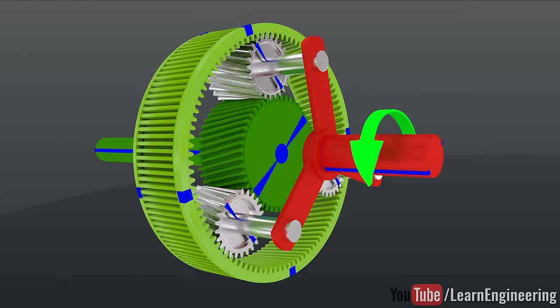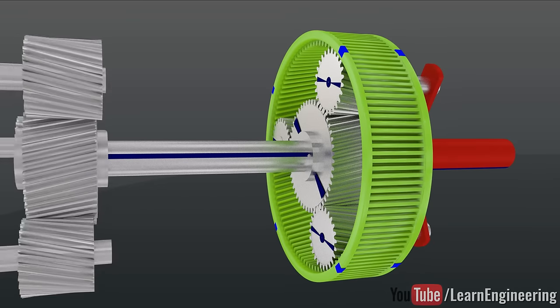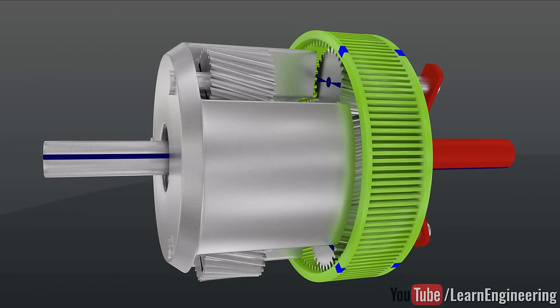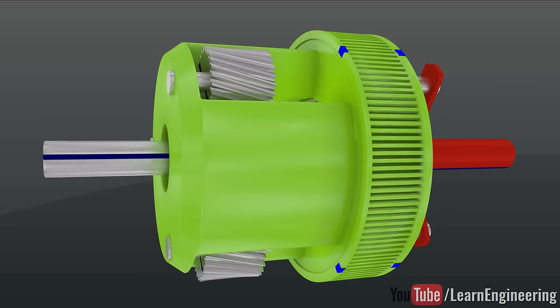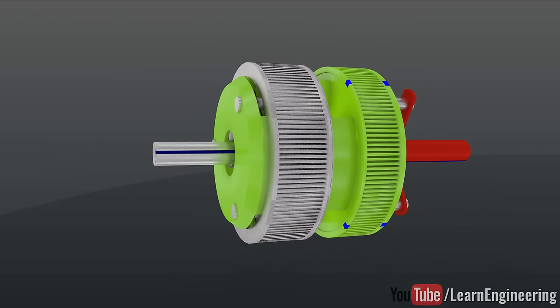To achieve this objective, let's introduce one more planetary set. The output of the second set is connected with one of the inputs of the first set. In simple words, the carrier of the second set and the ring gear of the first set are a single unit. This forms an interesting mechanism and is the simplest automatic transmission possible.